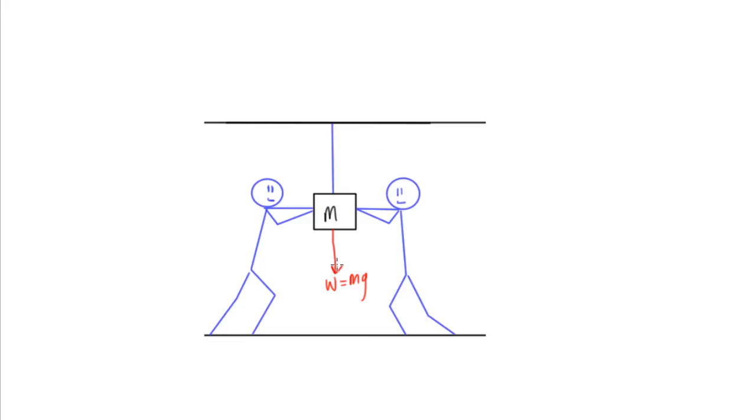Also, to prevent this from flying down, it's going to have to have this rope pulling up on it. So we'll call this tension. And these two forces are going to balance in the Y direction, or the up and down direction.